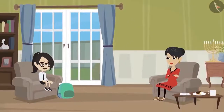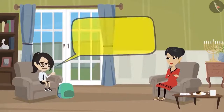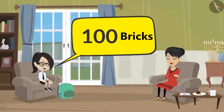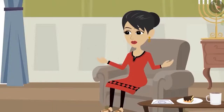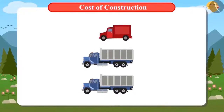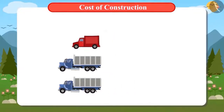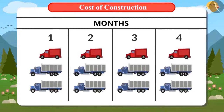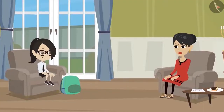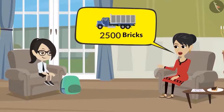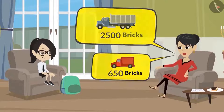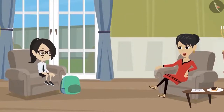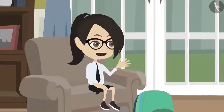Vandana asks her mum about the shortfall. Mum explains, 'We will not just buy bricks in big trucks. Every month we will purchase 2 big trucks and 1 small truck full of bricks. So we will buy all the bricks in 4 months.' A big truck can hold 2,500 bricks and a small truck can hold 650 bricks. If you look at the calculation yourself, you will see that in this way all the bricks will come to us in 4 months.